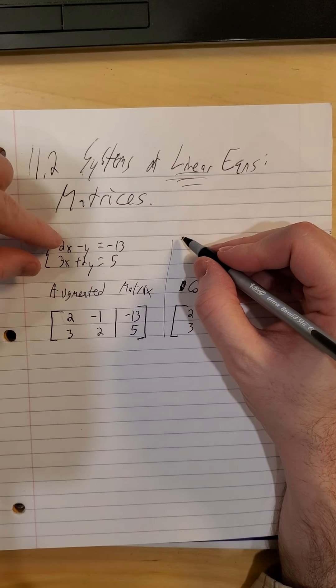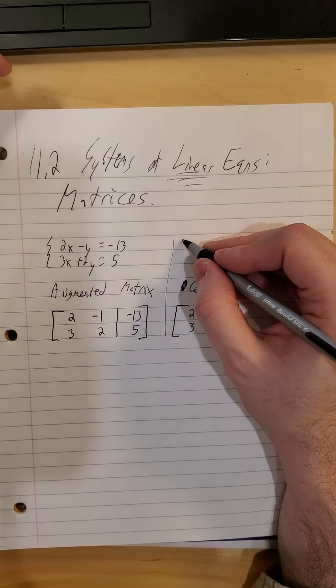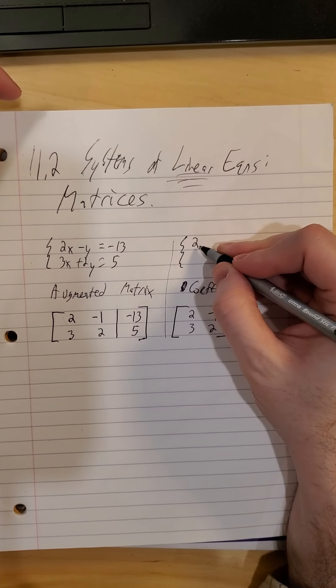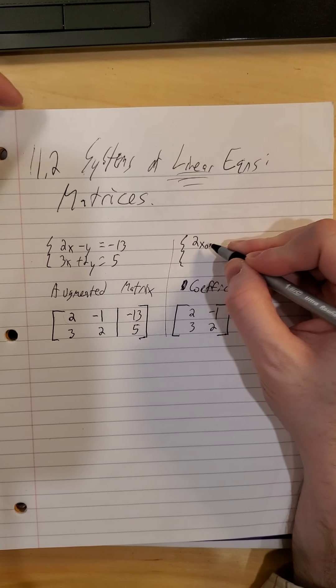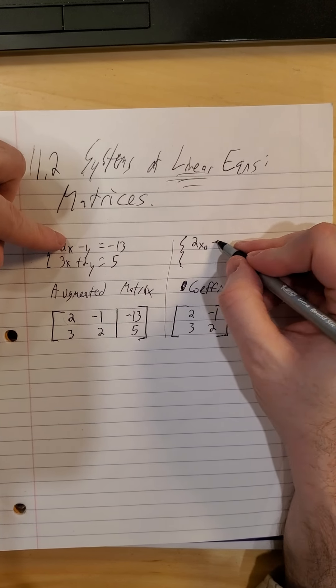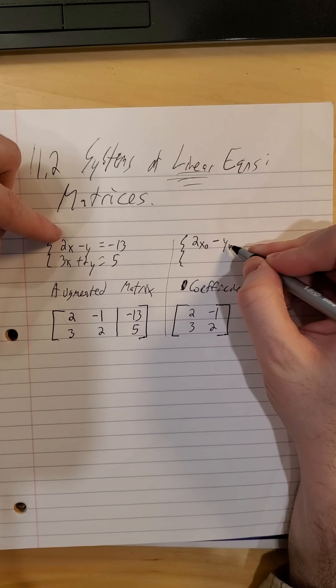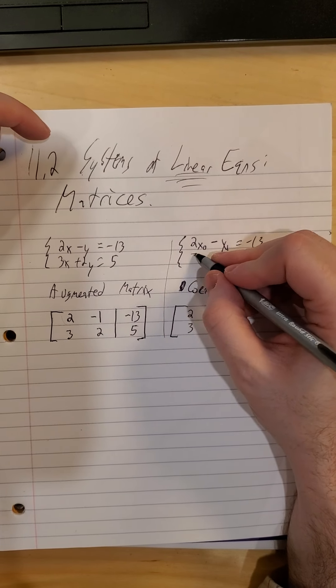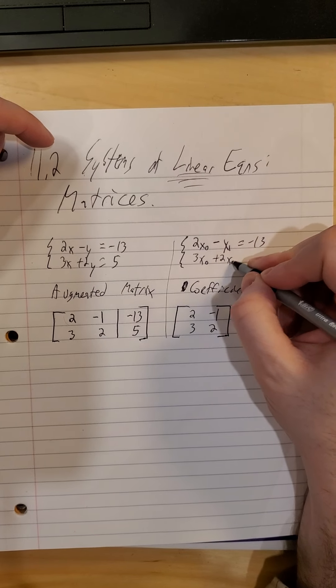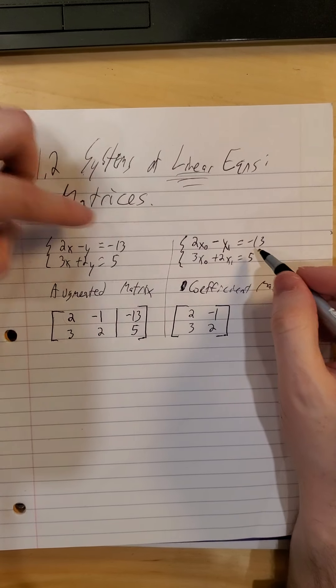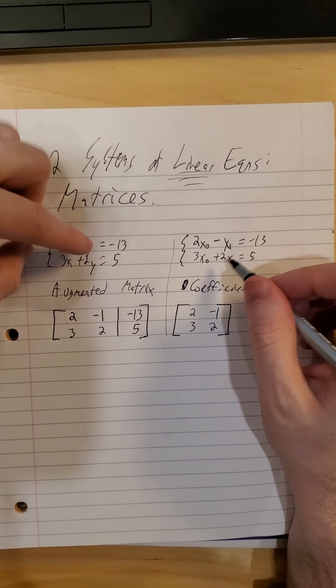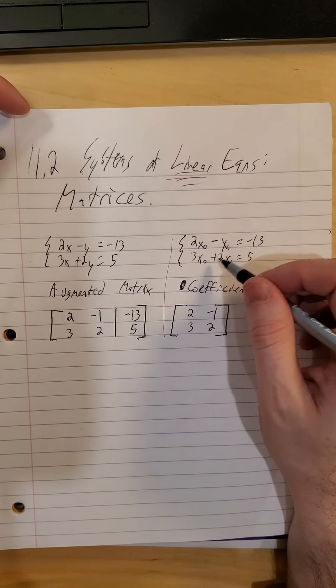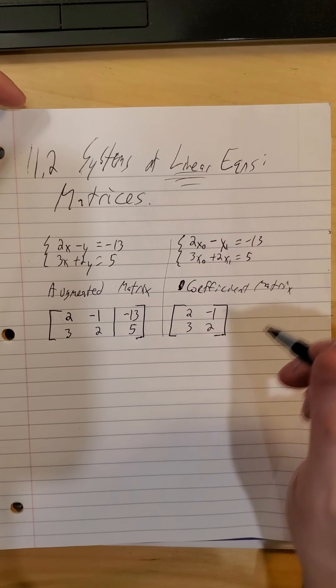Just as a heads up, we don't always necessarily use x's and y's. Occasionally we'll see subscripts used. So you might see the same system represented as 2x0 minus x sub 1 is negative 13 and 3x0 plus 2x sub 1 is 5. That's really the same system. And just instead of calling it x and y, occasionally we'll just treat them as multiple input variables.